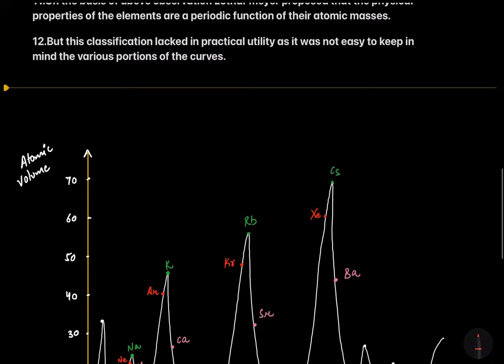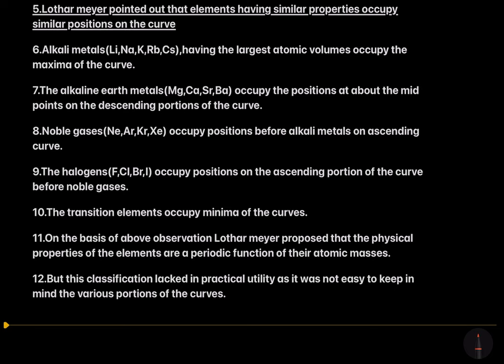The halogens — fluorine, chlorine, bromine, and iodine — occupy positions on the ascending portions of the curve, just before the noble gases.